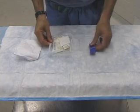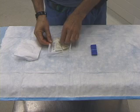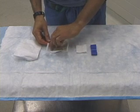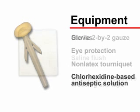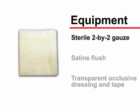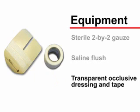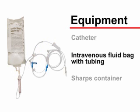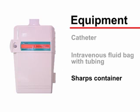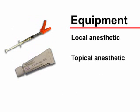Gather the equipment and have it ready at the bedside before beginning the procedure. You will need gloves, eye protection, a non-latex tourniquet, chlorhexidine-based antiseptic solution, sterile 2x2 gauze, a saline flush, a transparent occlusive dressing and tape, and an appropriately sized catheter ranging from 14 to 24 gauge, an intravenous fluid bag with tubing, and a sharps container. A local or topical anesthetic may be required if the catheter is 20 gauge or greater.